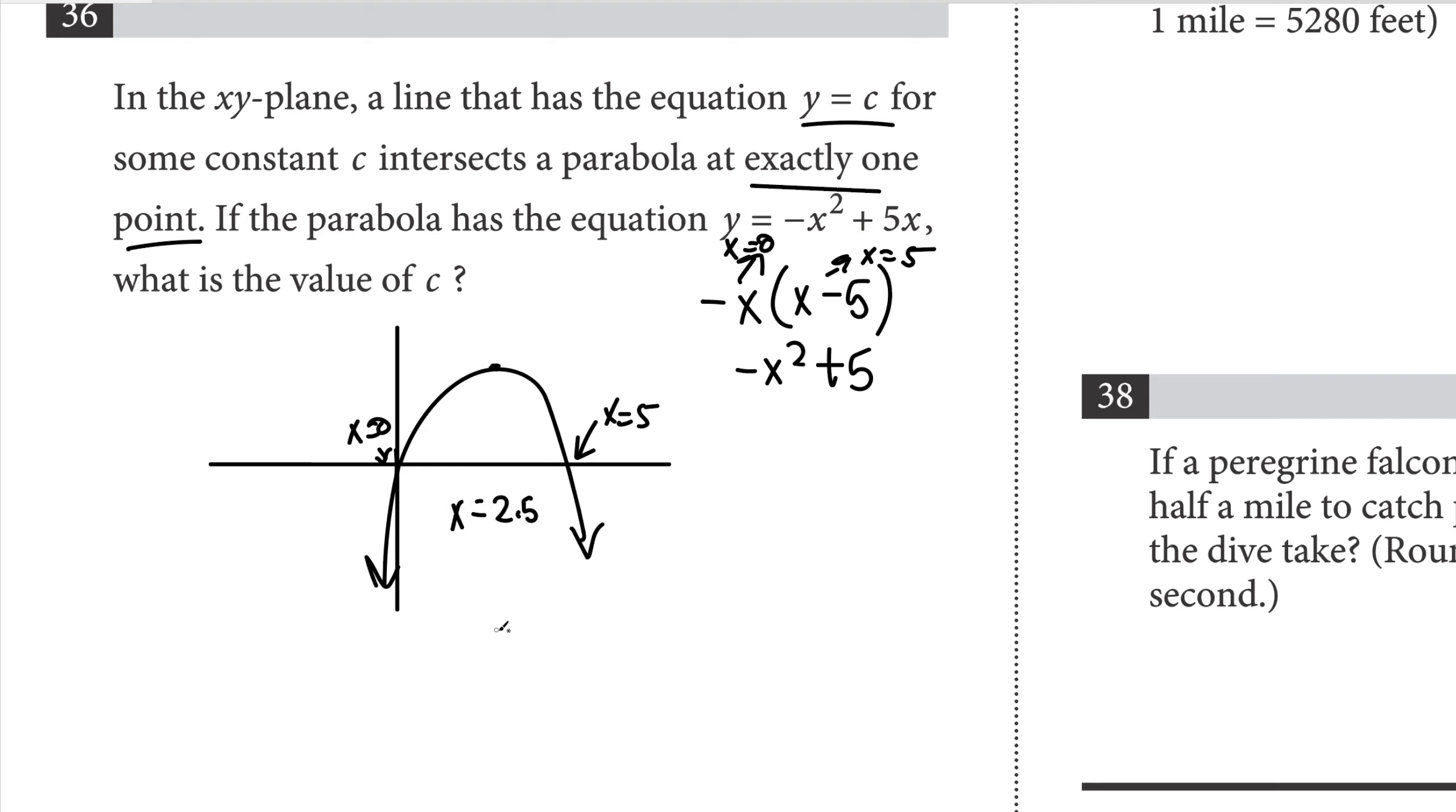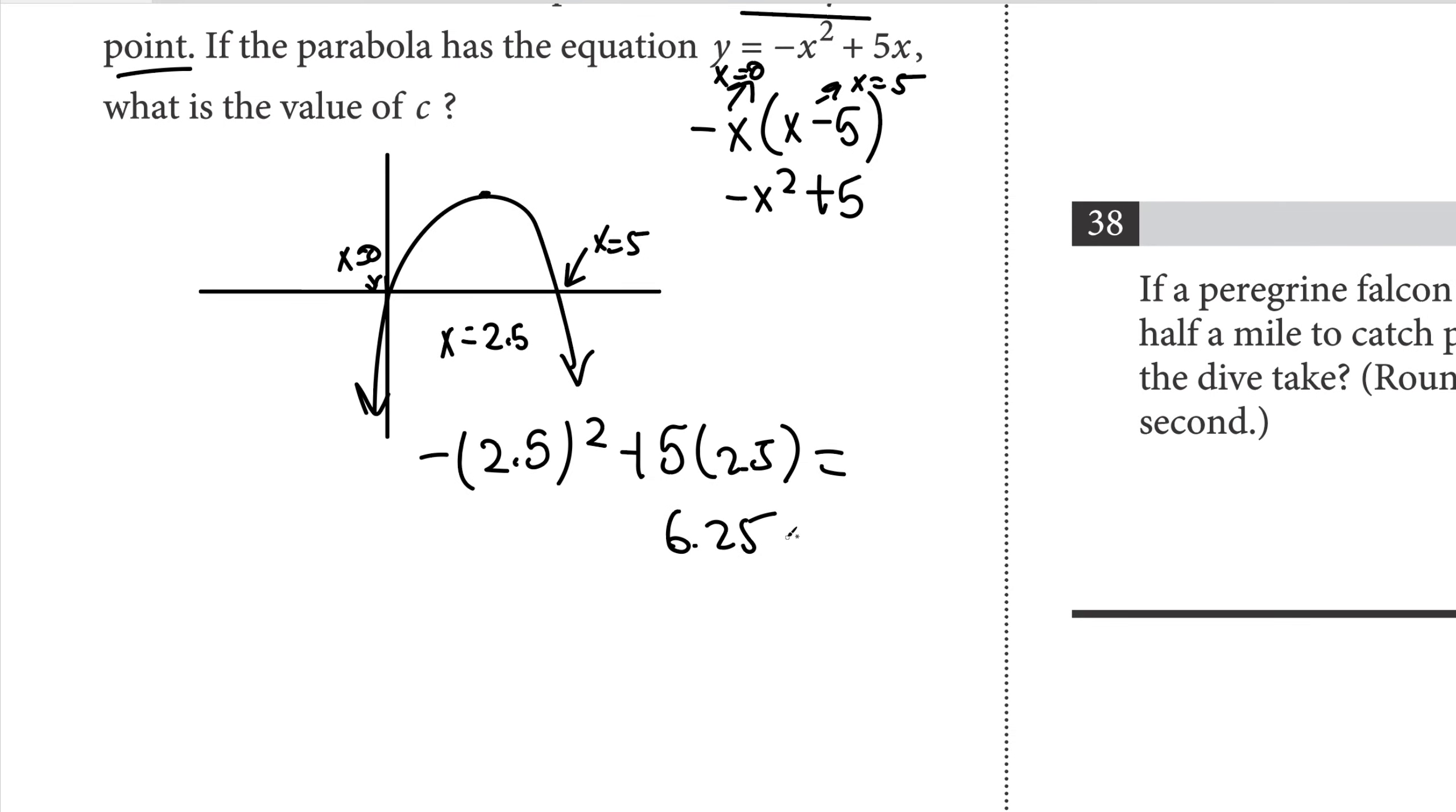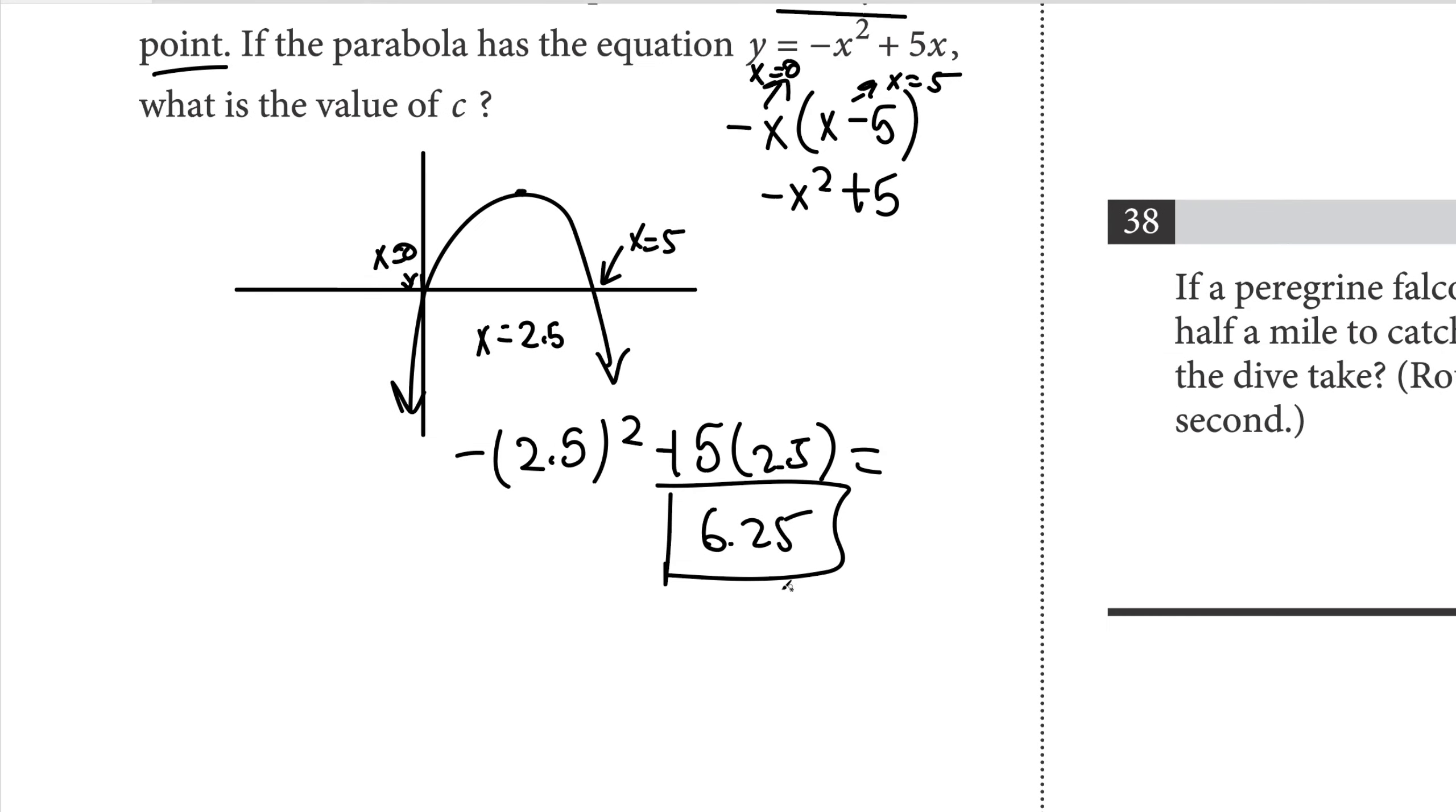Let's plug that in. So negative 2.5 squared plus 5 times 2.5. Plugging this into my calculator I get 6.25, and that's my final answer. If you can't write this on the exam, it's just going to be 25 over 4.